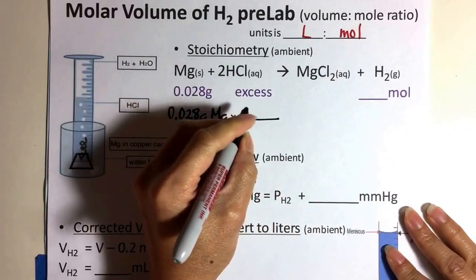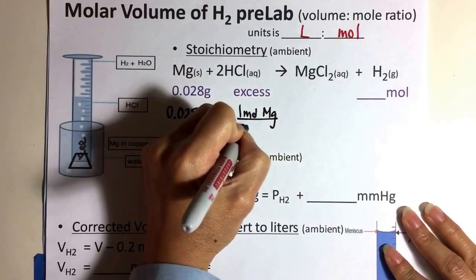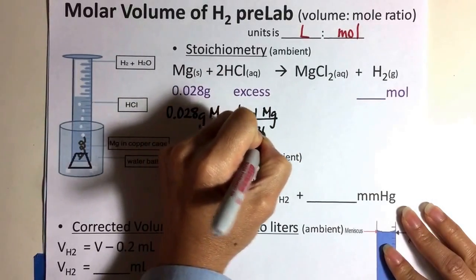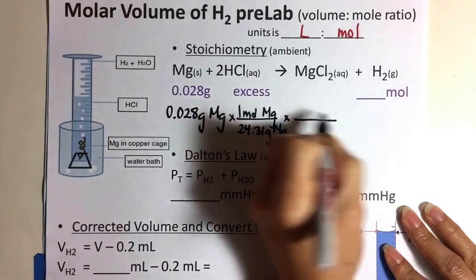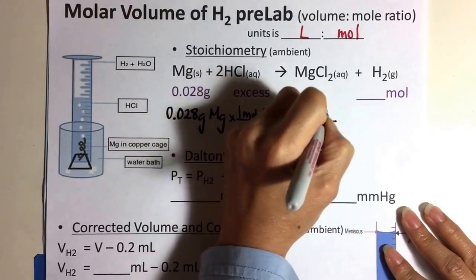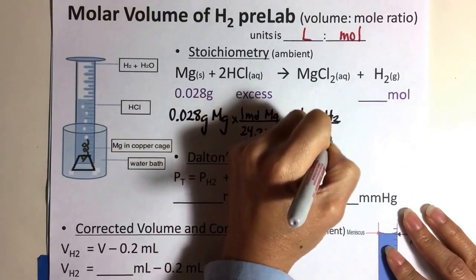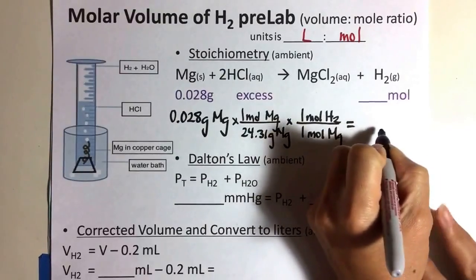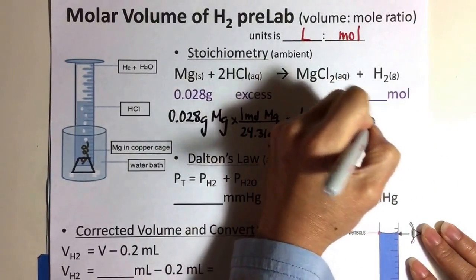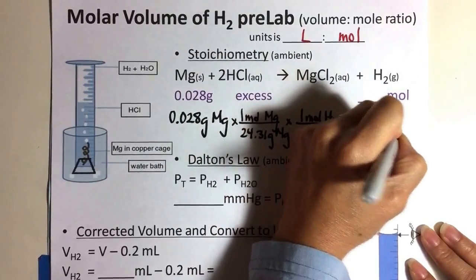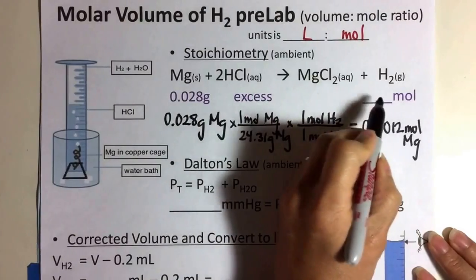So again, you're just doing some stoichiometry. One mole of magnesium has 24.31 grams of magnesium. And then you ratio it out with hydrogen. So one mole of hydrogen gas has one mole for every one mole of magnesium. And that will then give you the moles of hydrogen gas. And I calculated this, and I determined the moles to be 0.0012 moles of magnesium.